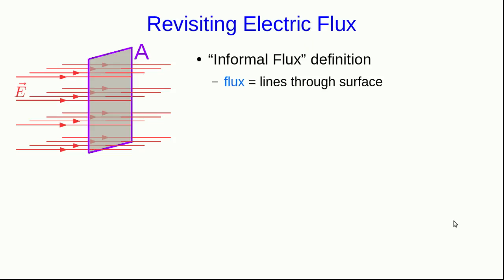The reason our statement of Gauss's Law so far is informal is that our definition of electric flux is very informal. We've defined it so far as simply the number of lines passing through a surface. And note that that makes it arbitrary, because the number of lines we draw into or out of a charge is arbitrary.